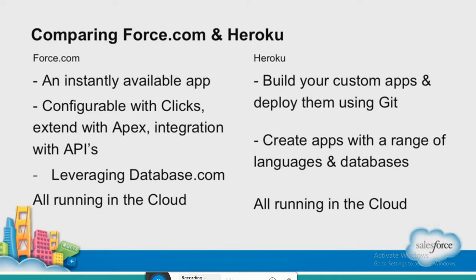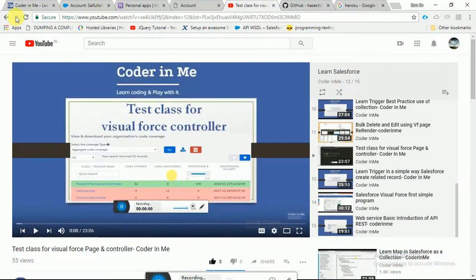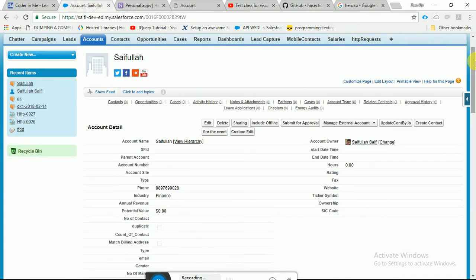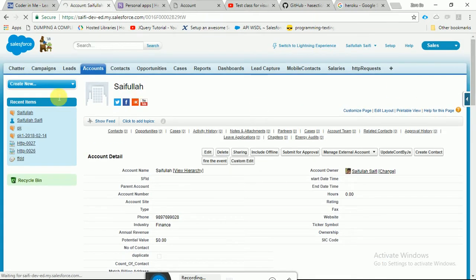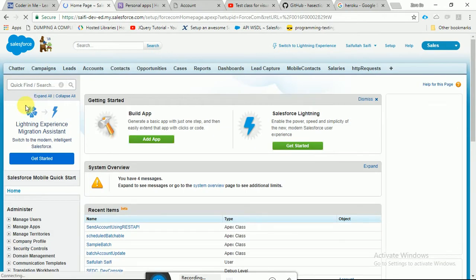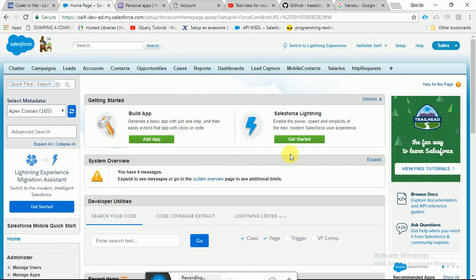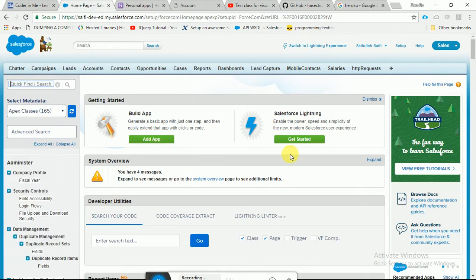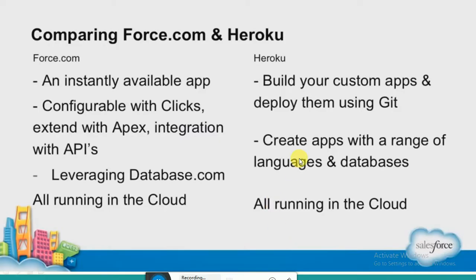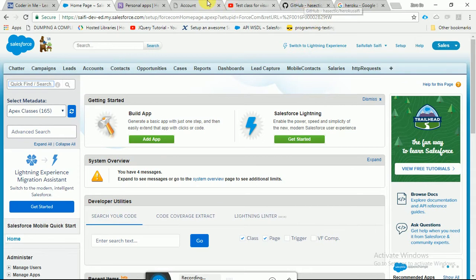There are two things we use: Postgres and force.com. Postgres is a very widely available database you can use with Heroku. Force.com is configurable with clicks, Flex integration, and APIs. It can use Oracle as a background database and works on the cloud. Now let me show you a Heroku app — this is an app for accounts that you can interact with.